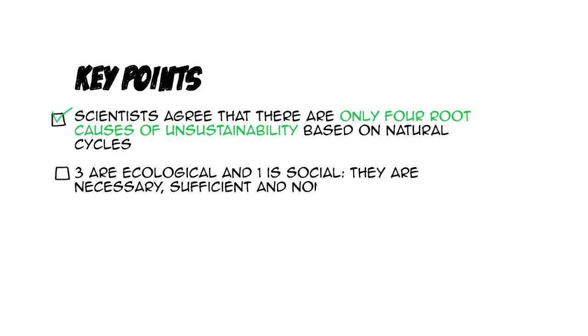The first one is that scientists agree that there are only four root causes of unsustainability based on natural cycles. Three are ecological and one is social. They are all necessary, sufficient, and non-overlapping. And if we stop doing these four things, we will be sustainable.